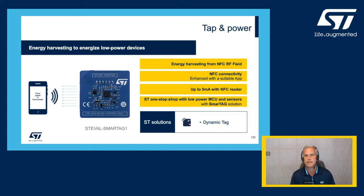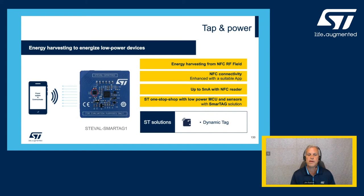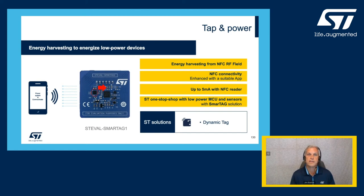Tap and power is a favorite use case, demonstrated by the ST Eval Smart Tag 1 eval board, available through ST distribution partners or your local ST sales contact. This board features the ST25 dynamic tag with an antenna embedded in the PCB. Uniquely, it has an energy harvest output pin that takes the NFC field and supplies enough voltage to power the microcontroller and sensors on the board, giving an instantaneous sensor reading with no power other than the NFC field from your phone.